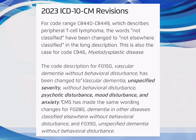2023 ICD-10-CM Revisions: For Code Range C84.40–C84.49, which describes Peripheral T-cell Lymphoma, the words 'not classified' have been changed to 'not elsewhere classified' in the long description. This is also the case for Code C94.6, Myelodysplastic Disease. The code description for F01.50, Vascular Dementia Without Behavioral Disturbance, has been changed to 'Vascular Dementia, Unspecified Severity, Without Behavioral Disturbance, Psychotic Disturbance, Mood Disturbance, and Anxiety.' CMS has made the same wording changes for F02.80, Dementia and Other Diseases Classified Elsewhere Without Behavioral Disturbance, and F03.90, Unspecified Dementia Without Behavioral Disturbance.